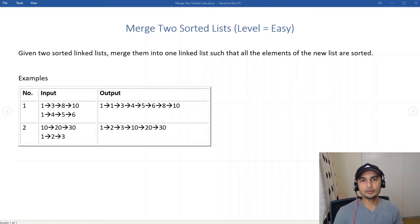Hi guys, in this video we'll look at how we can merge two sorted linked lists into a single one. Given two sorted linked lists, merge them into one linked list such that all the elements of the new list are sorted.